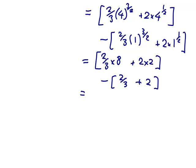So, well, 2 thirds times 8 minus 2 thirds would be 2 thirds times 7. And 2 times 2 minus 2 would just be 2. So we've got 14 thirds, and 2 would be 6 thirds, so 20 over 3.